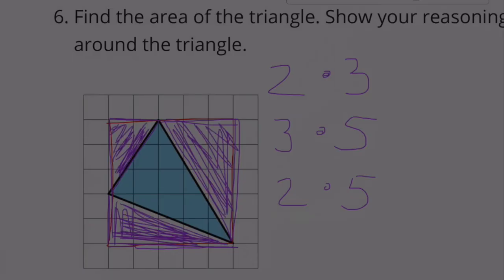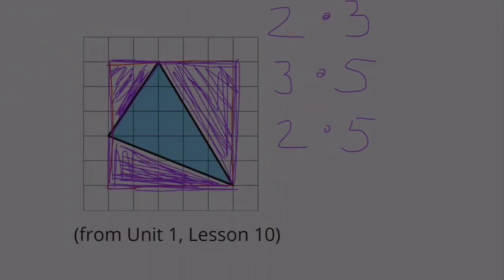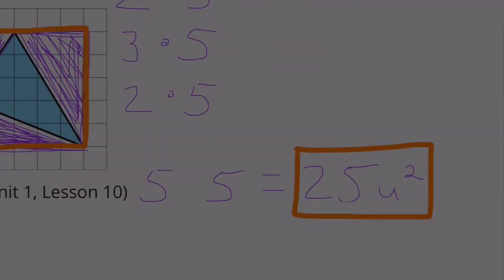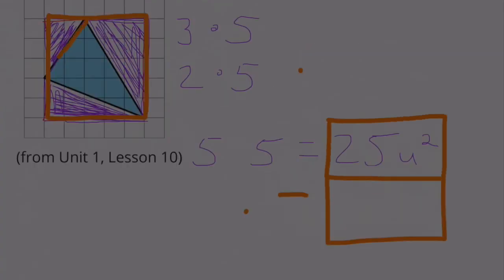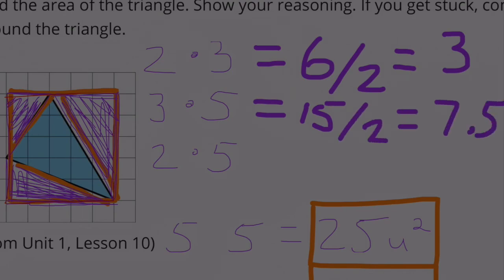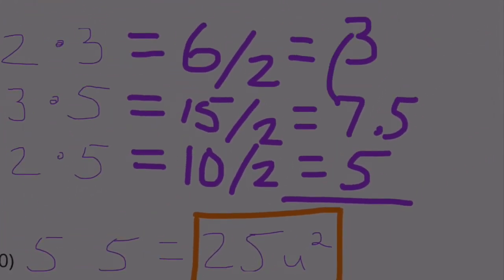If we subtract the three areas shaded in purple, it would leave us with the area in blue. I drew a 5 by 5 square. 5 by 5 is 25 units squared. I need to subtract the areas of these three triangles. 2 times 3 is 6. Half of 6 is 3. 3 times 5 is 15. Half of 15 is 7.5. 2 times 5 is 10. Half of 10 is 5. 3 plus 7 is 10. 10 plus 5 is 15. Bring down the 0.5.